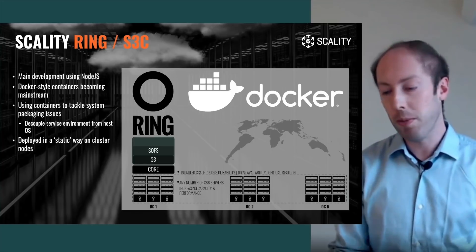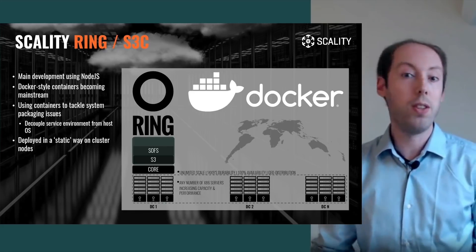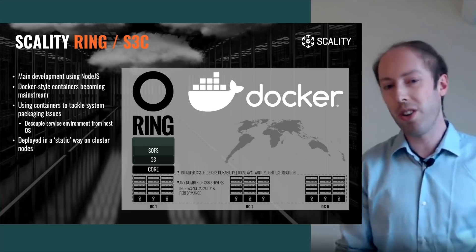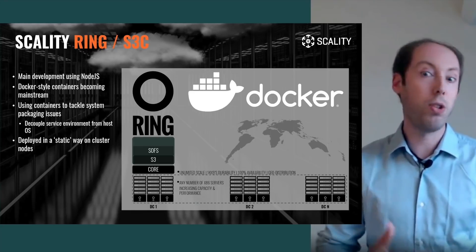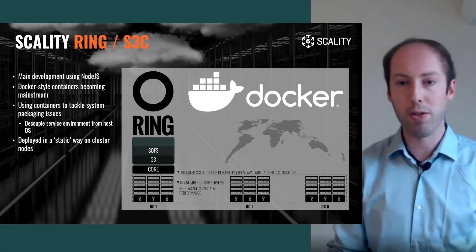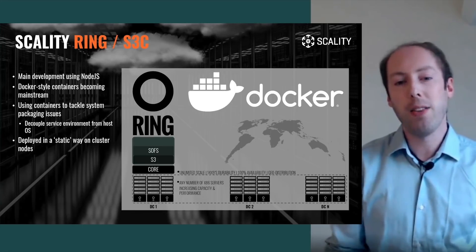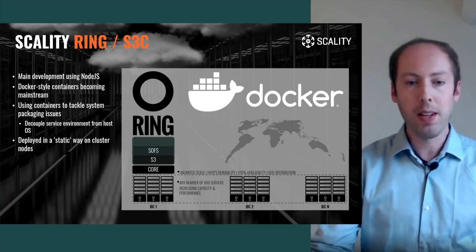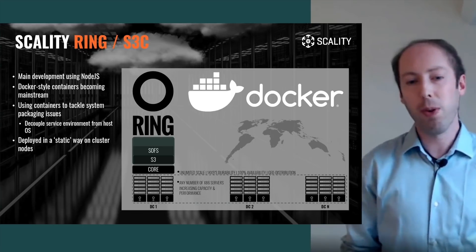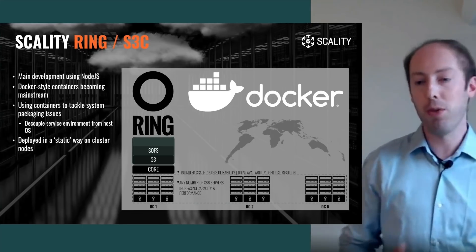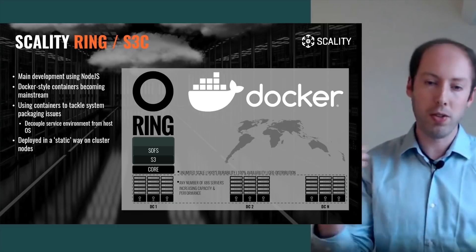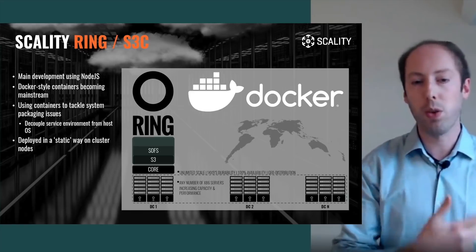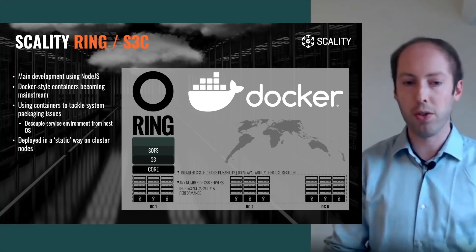As a result, back then, we decided to build S3C — the S3 connector, Scality Ring S3 connector — using Docker-style containers, and actually use Docker to deploy this on the various nodes that make up a cluster. We use containers to tackle this packaging issue, which completely decouples the service environment from the host operating system.